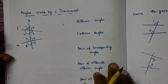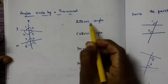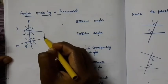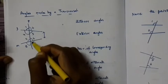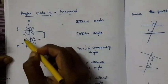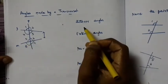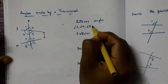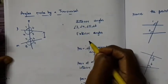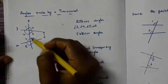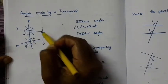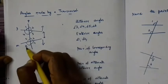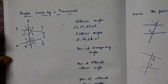First we will understand what are interior angles. These are the two lines L and M. The angles which lie inside, between lines L and M, are four angles: angles 3, 4, 5, and 6. These four angles are called interior angles. Similarly, exterior angles are those outside lines L and M — angles 1, 2, 7, and 8 — these are called exterior angles.